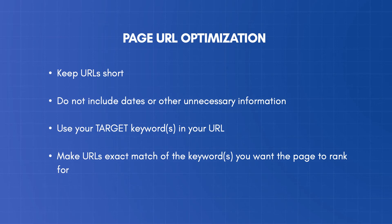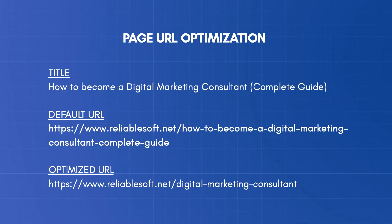Let's review a couple of real examples to understand how to apply the above rules in practice. The title of a post is 'How to become a digital marketing consultant.' By default, your CMS will create a URL that contains all words that make up the title separated by dashes. This is not bad, but it's too long to remember and contains words that are not really needed. A better version is to include only the targeted keywords in the URL — in this case, 'digital marketing consultant.' Now the URL is shorter, easier to remember, and an exact match of the target keyword.